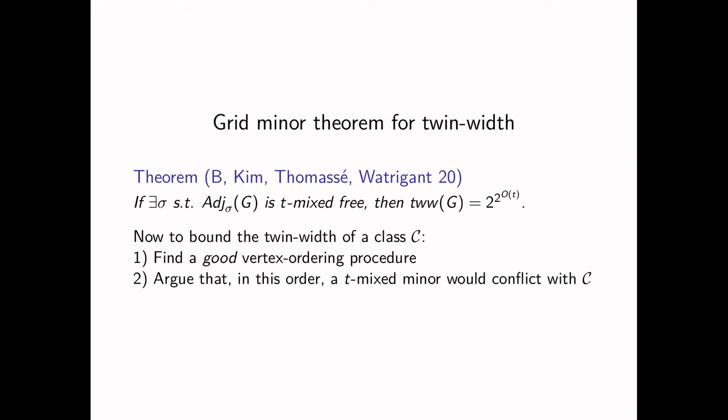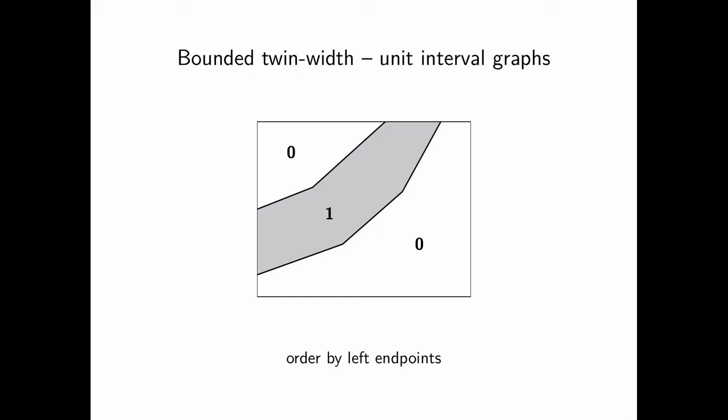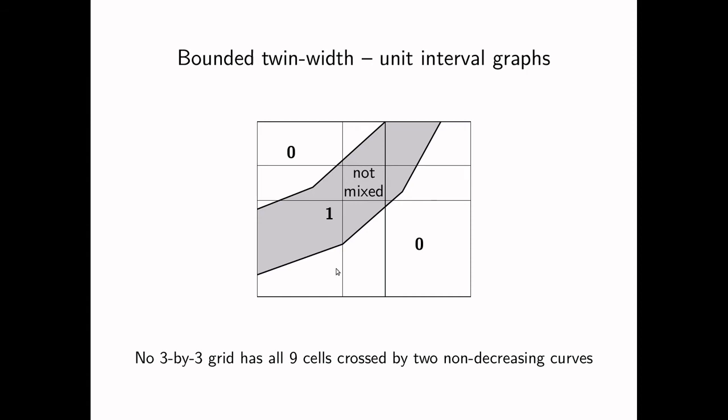So here we want to define a mixed minor. A t mixed minor would be a t by t division of a matrix such that every cell is complicated in the sense that it's mixed—it's not horizontal nor vertical, it's not the copy of the same row vector nor the copy of the same column vector. And we'll say that the matrix is t mixed-free if it doesn't have a t mixed minor. There's a characterization of bounded twin-width via mixed minors. If there is an ordering of the vertex set such that when you write down the adjacency matrix of your graph with that order, the matrix that you get is t mixed-free, then the twin-width is bounded by a function of t.